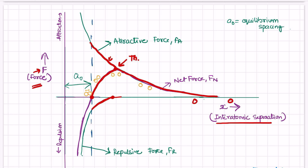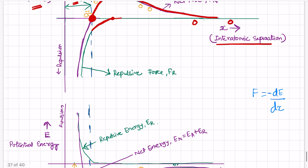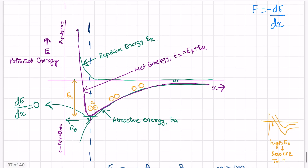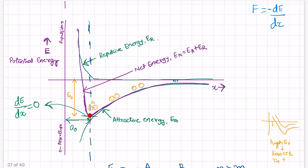At the point where interatomic separation is a-naught, the force is zero and potential energy is at a minimum. If we observe the curve of potential energy versus interatomic separation, at a-naught — the equilibrium separation — the energy is minimum. When we apply force on the material, the interatomic separation increases, and there is a rise in energy.